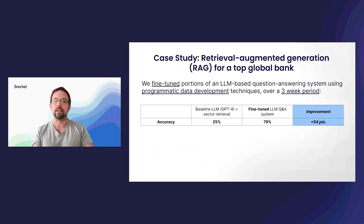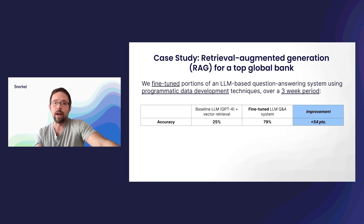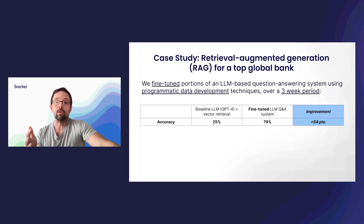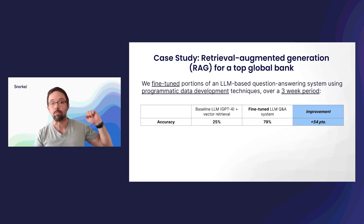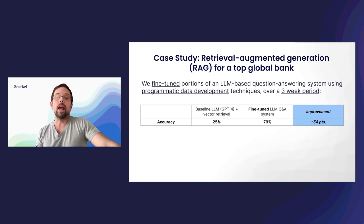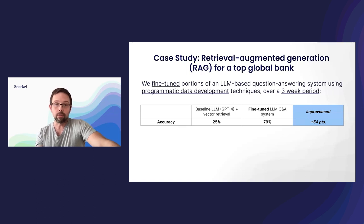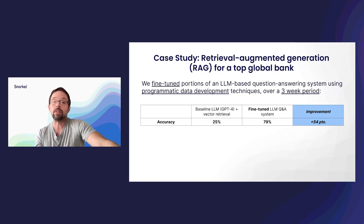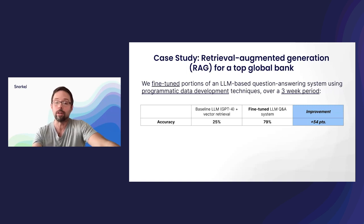I'm going to go through a case study that really proves this out, for a top global bank. This is a project we executed last quarter on retrieval augmented generation, or RAG. A RAG system is a special case of this application ecosystem — the large language model is asked a question and needs to pull relevant documentation to answer it. We were able to fine-tune that entire ecosystem over three weeks using programmatic data development techniques, obtaining a 54-point increase in accuracy with minimal time from the subject matter expert.